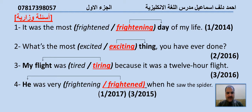Ministry exam questions. Number one: It was the most frightened/frightening day of my life — first attempt 2014. We are going to choose frightening, because it describes a thing — we have 'day' here. The sentence becomes: It was the most frightening day of my life.